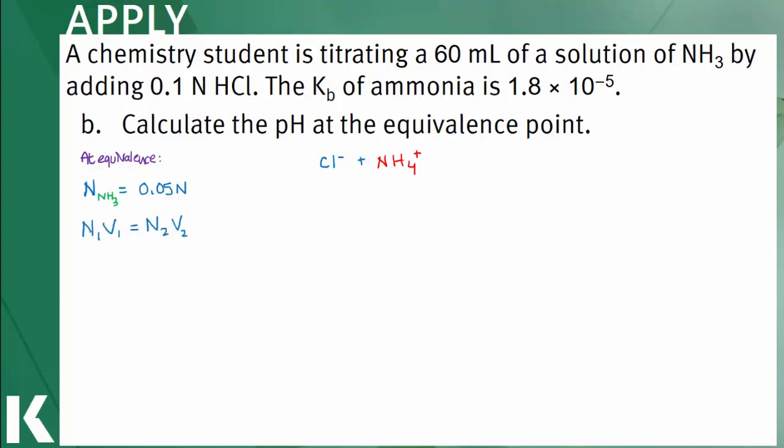Use the equation N1V1 equals N2V2 and rearrange to solve for the normality of ammonium. Add in the normality of ammonia that was calculated earlier, multiplied by the volume of 60 mL, and divide by the final volume of 60 plus 30 mL. The normality of ammonium is 0.033 normal.